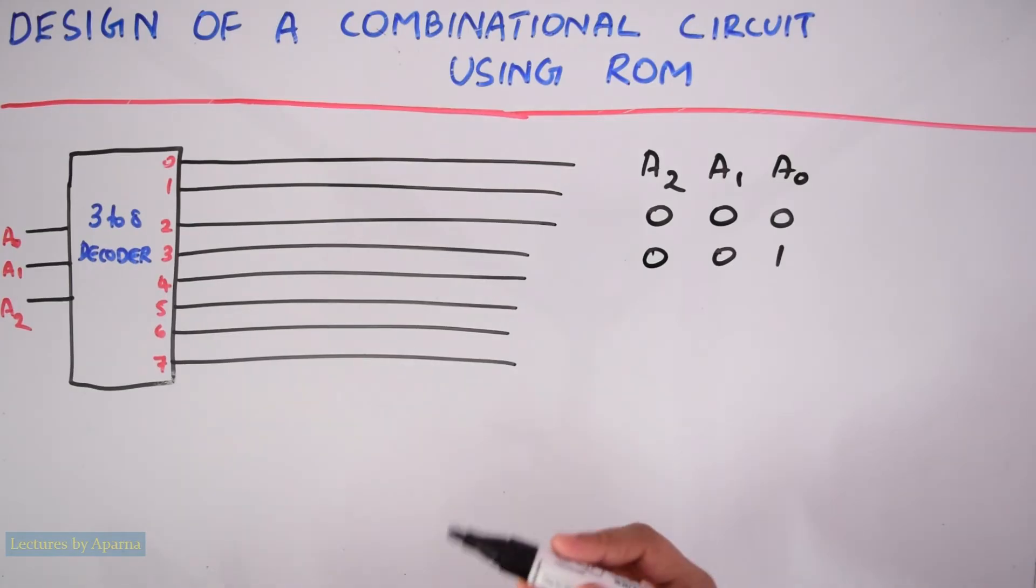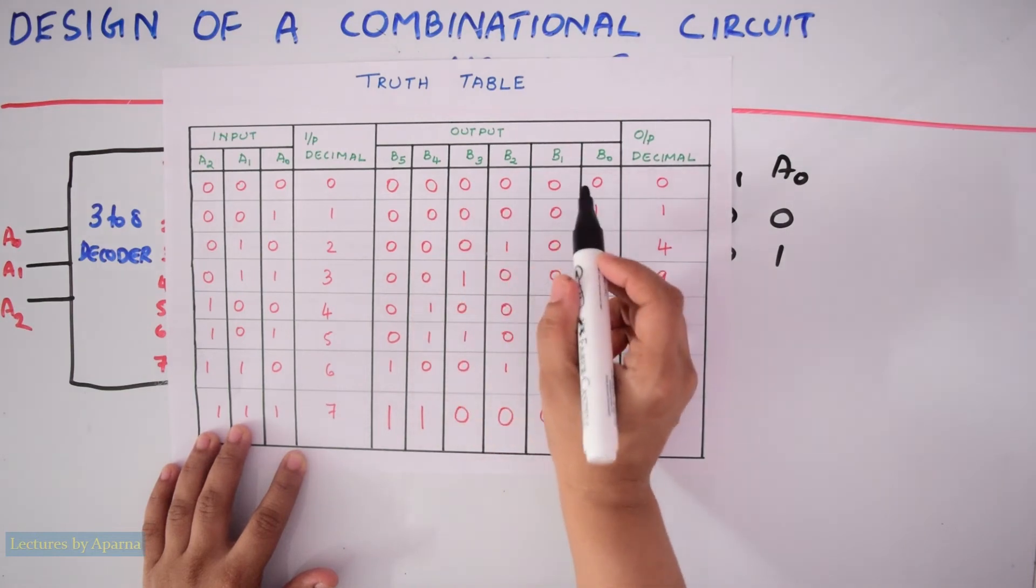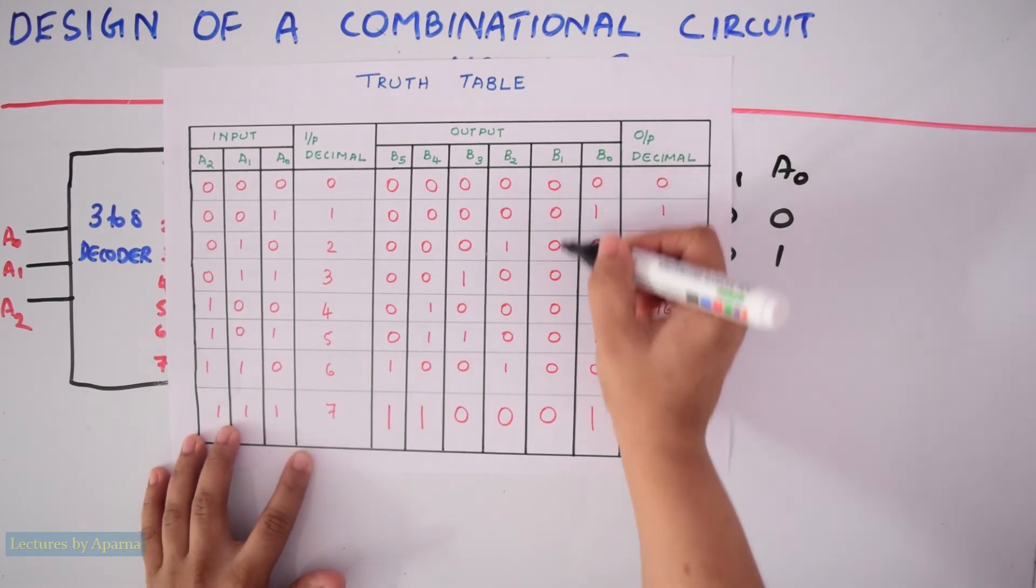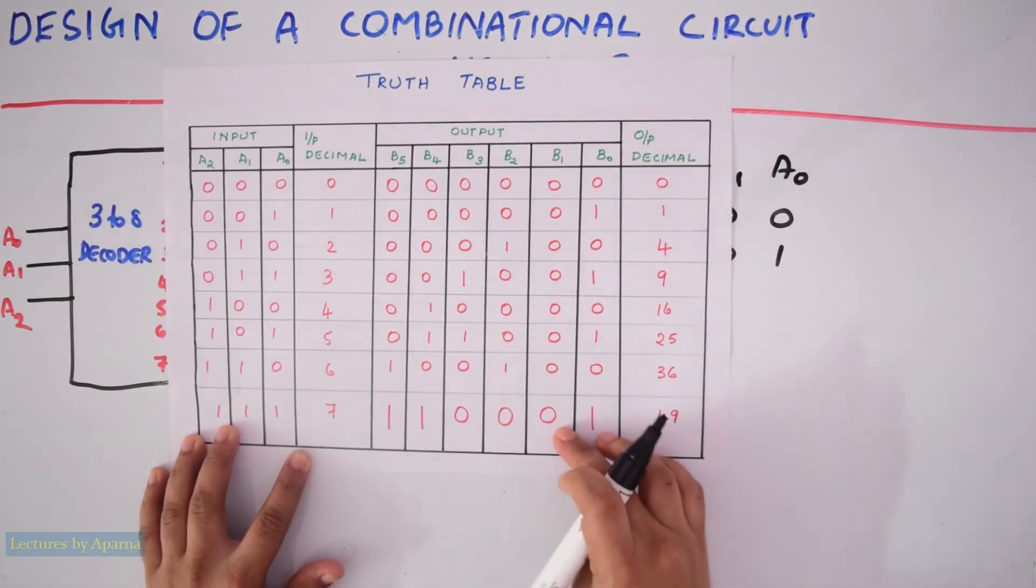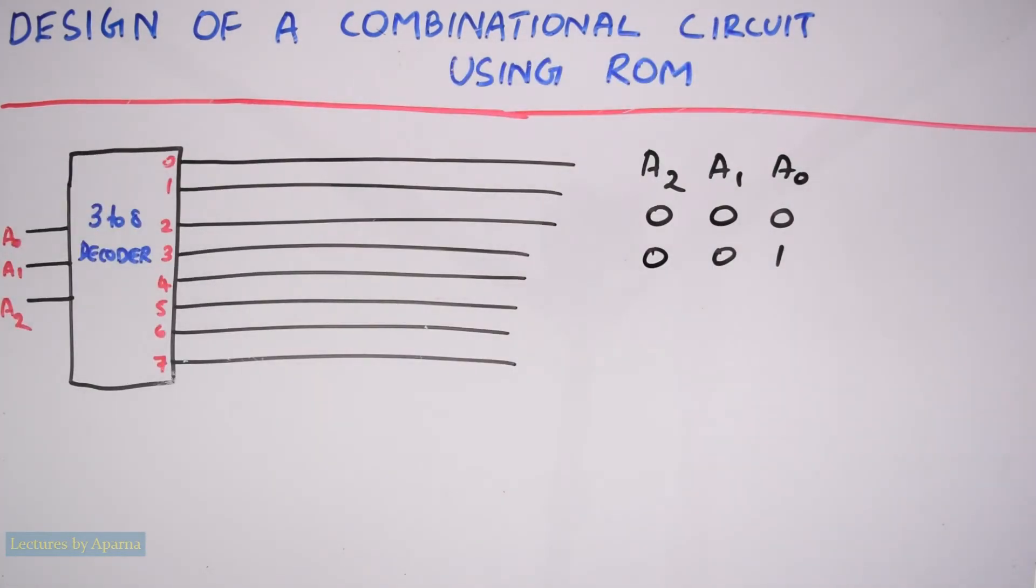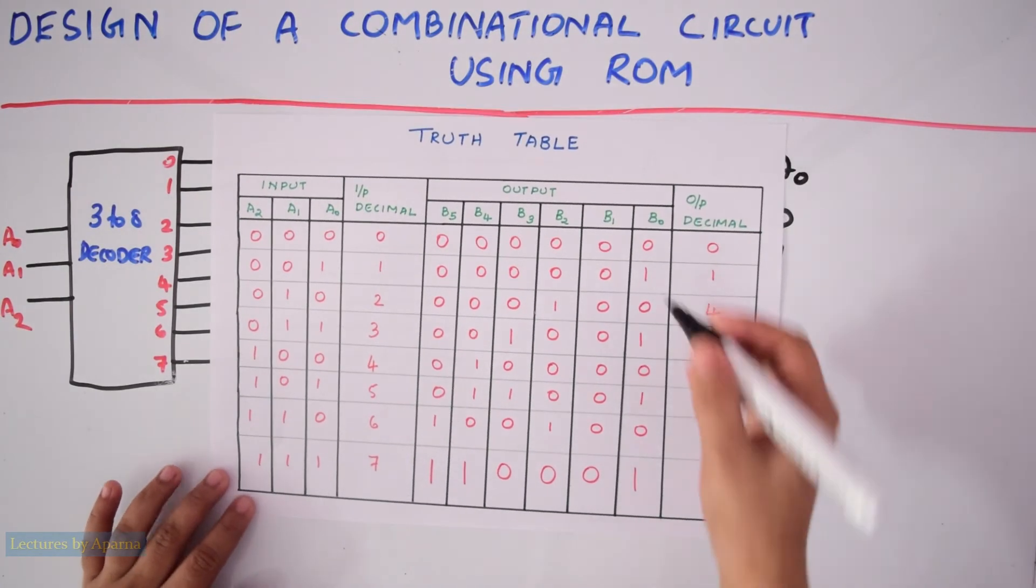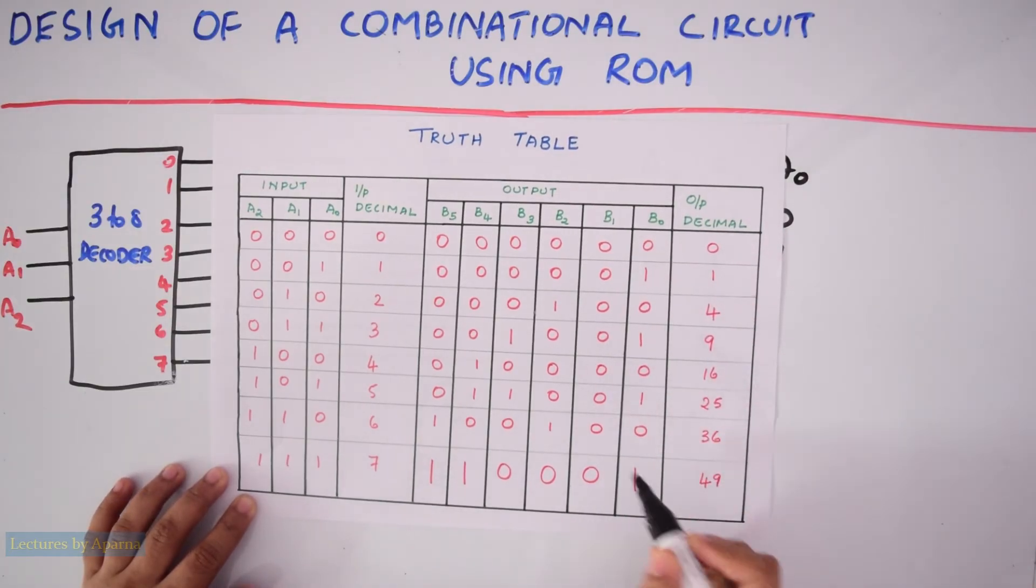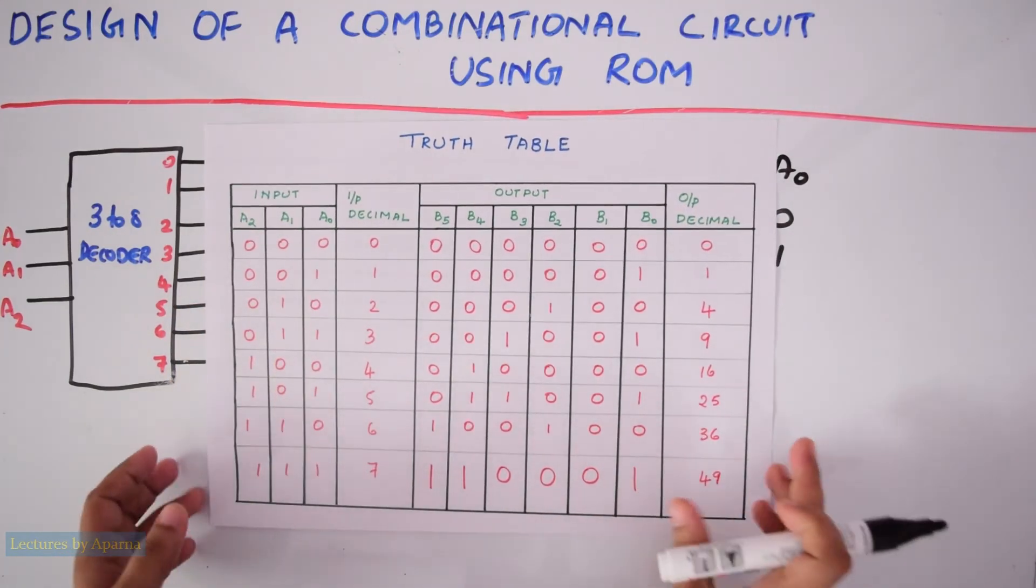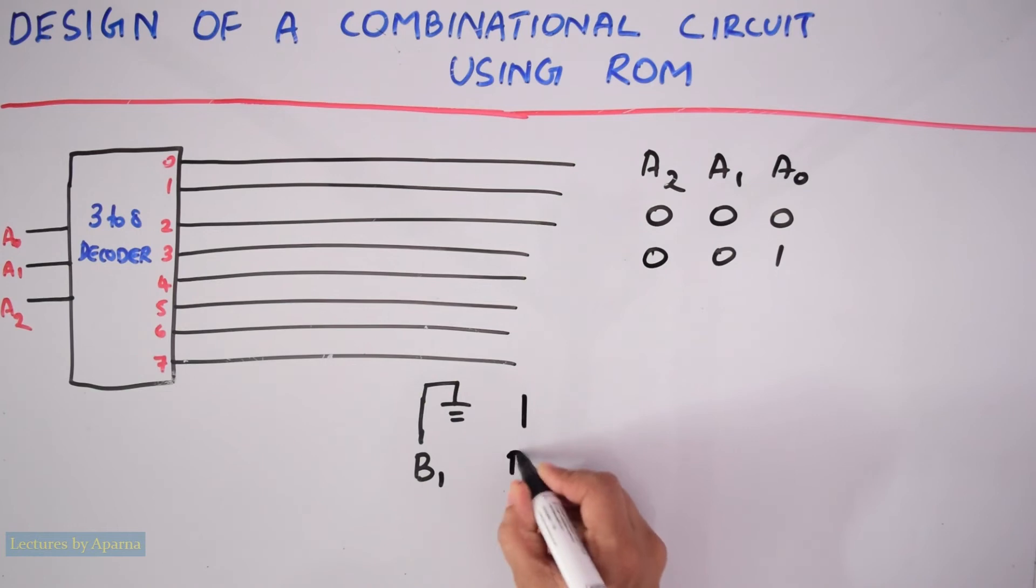Now we have to see the output side. At the output, we are having 6 outputs: B5, B4, B3, B2, B1, and B0. Looking at the truth table, we can see that B1 is always 0. So we can connect the output B1 to ground. Also, output B0 is the same as input A0. These two columns are the same, so we can connect B0 to the input terminal A0.